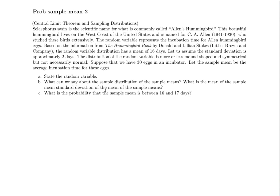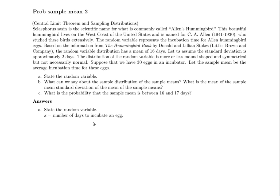This is a problem that Catherine Kosak proposed in one of her videos. It's looking at a certain kind of hummingbird, and we want to study the incubation time for eggs for those hummingbirds. This looks very much like a written assignment — the idea is to provide the original problem and then provide the answers. The first question being asked is to state the random variable. The random variable is what we're measuring: the incubation time for individual eggs. We'll call that random variable X, and it's the number of days to incubate an egg.